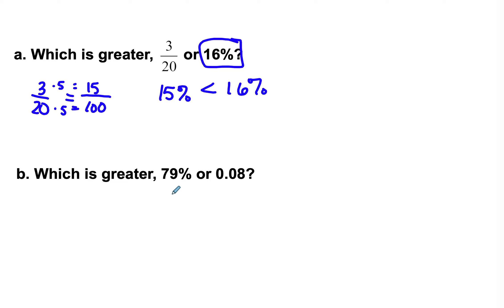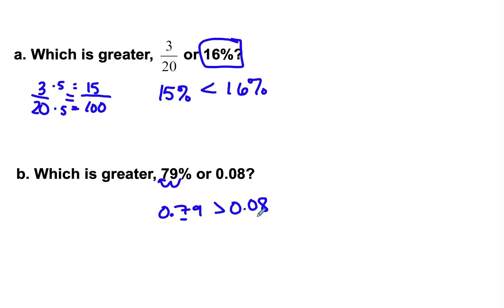Which is greater: 79 percent or 8 hundredths? I'll change 79 percent into a decimal, so we'll make them both decimal versions. 79 percent becomes 0.79. That's going to be greater than 0.08. If I'm comparing place values, I look at my tenths first — that's the largest place value I have in both. 7 is bigger than 0, so 79 percent is greater.